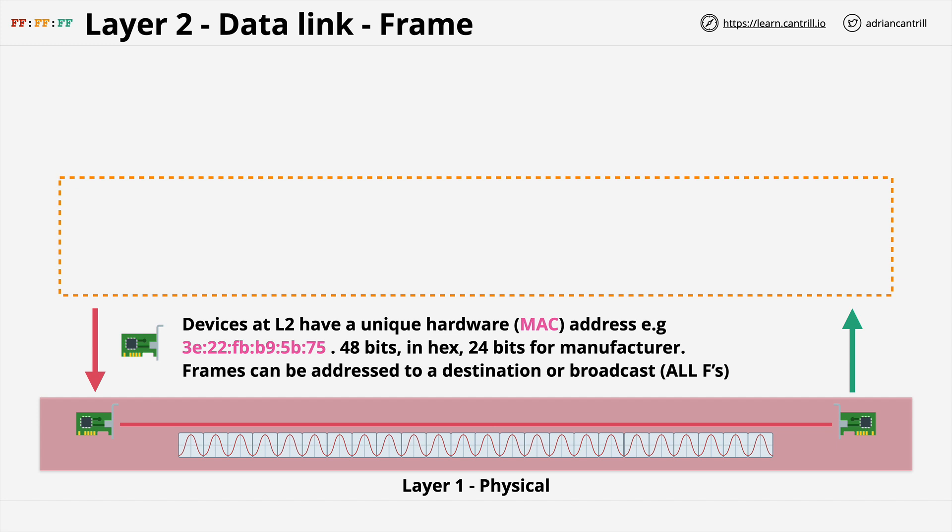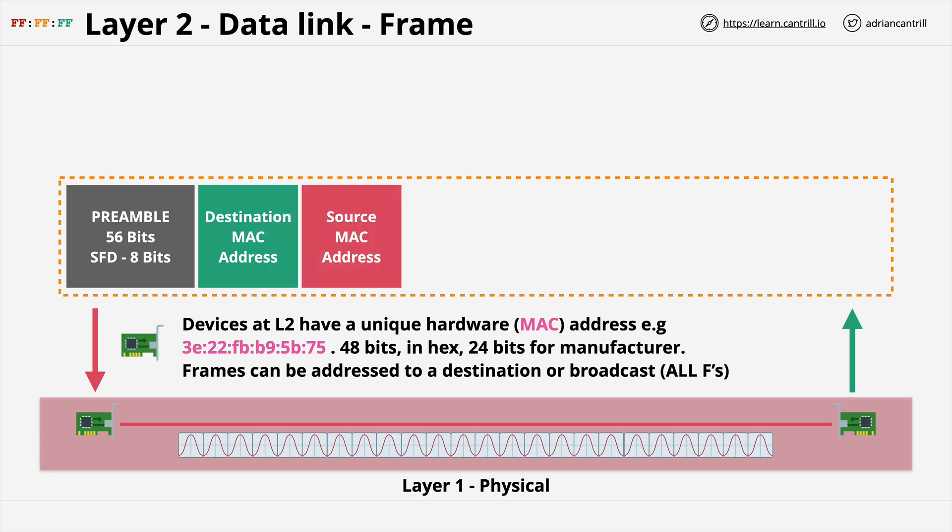When layer 1 is transmitting a frame onto the physical medium, layer 1 doesn't understand the frame — it is simply transmitting raw data. A frame, which is the thing that layer 2 uses for communication, is a container of sorts with a few different components. The first part is the preamble and start frame delimiter, which allows devices to know that it's the start of the frame so they can identify its various parts. Next come the destination and source MAC addresses. All devices on a layer 2 network have a unique MAC address, and a frame can be sent to a specific device by putting its MAC address in the destination field, or you can put all Fs to send the frame to every device on the local network — this is known as a broadcast.